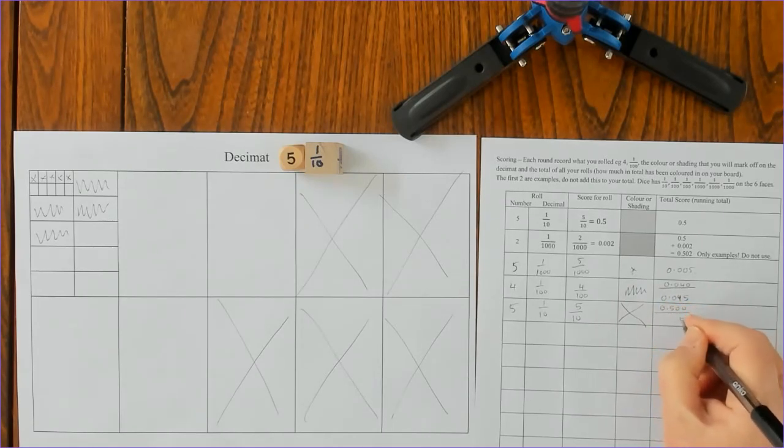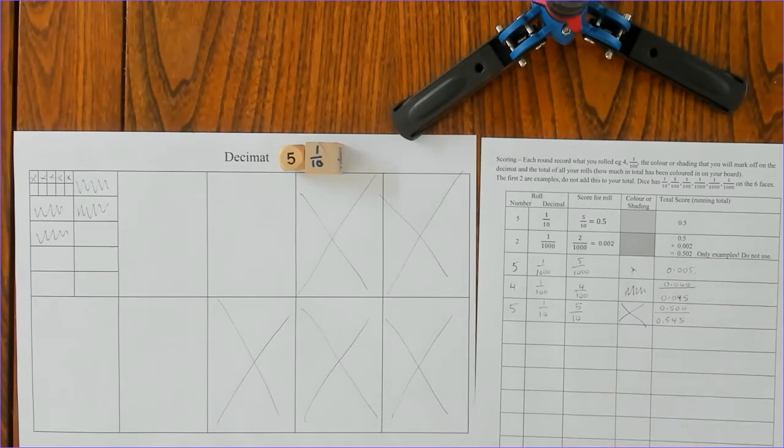Now I have to add in my five tenths, and now you can see that I've got five tenths, four hundredths, and five thousandths.